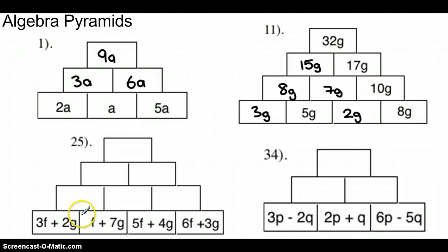When you move a bit further through the questions you'll see that you've got some expressions with 2 terms in it. In this case an f and a g. So we're going to need to add together the f, so we've got 3f and f, which will give us 4f. We've got 2g and 7g, which will give us 9g in that block there.